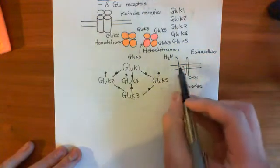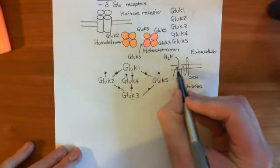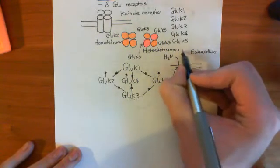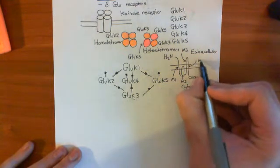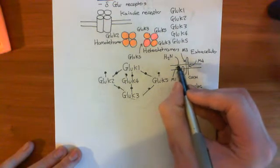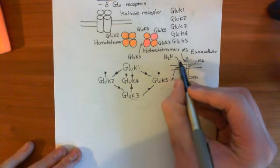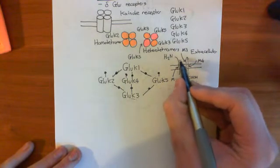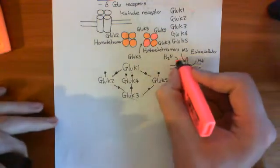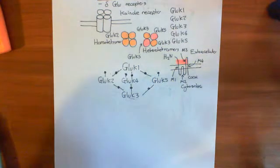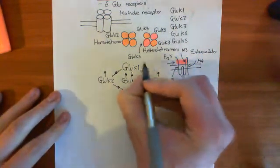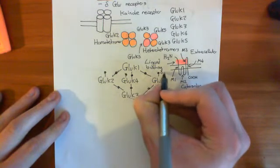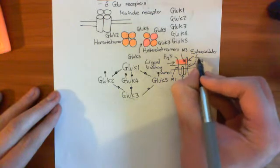These membrane-spanning domains have names: the first is M1, the loop which fails to span the membrane is M2, the third membrane-spanning domain is M3, and the fourth is M4. Just like in AMPA, a portion of the amino terminus prior to M1 and a portion of the M3–M4 loop adhere together, bind together, and form the ligand-binding domain — often abbreviated to LBD.